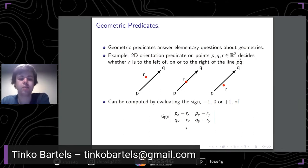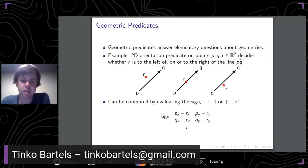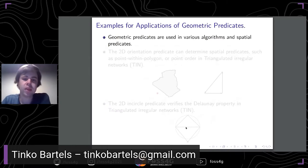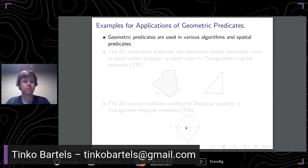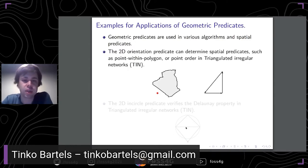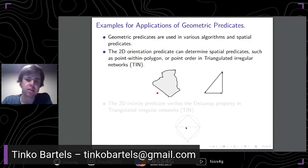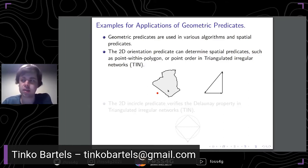This geometric predicate can be computed by evaluating the sign of the determinant of the matrix shown on the slide. The determinant would be a polynomial of second degree, so in real arithmetic this would be straightforward to compute. These geometric predicates are often used as subroutines of larger geometric algorithms or spatial predicates — for example, the 2D orientation predicate is used in the point-within-polygon spatial predicate.